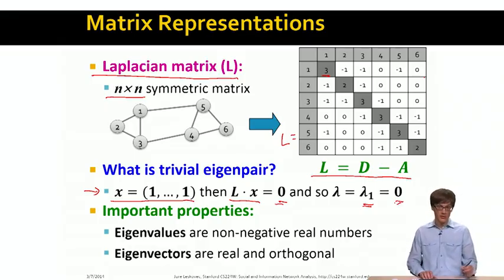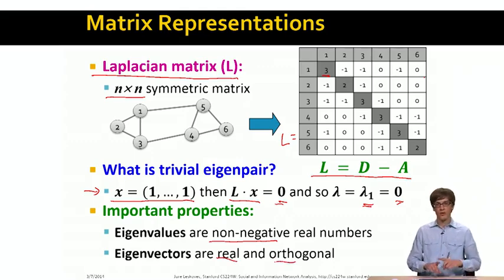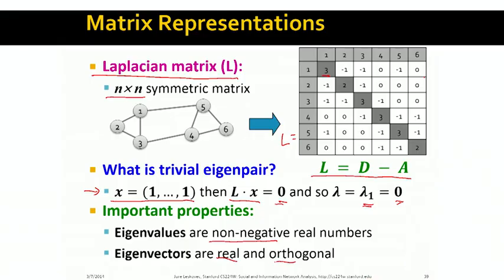And then, what are other important properties of this Laplacian matrix? First is that eigenvalues are non-negative real valued numbers. And the second one is, again, that eigenvectors are real and orthogonal. Orthogonal means that when I do a dot product of two eigenvectors, their dot product is 0.